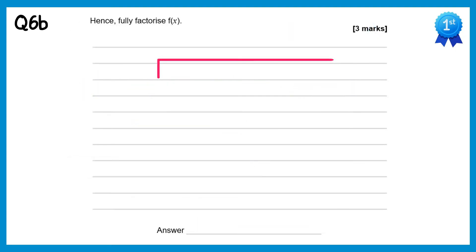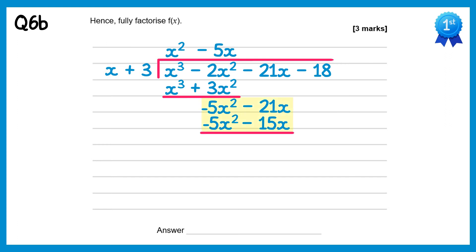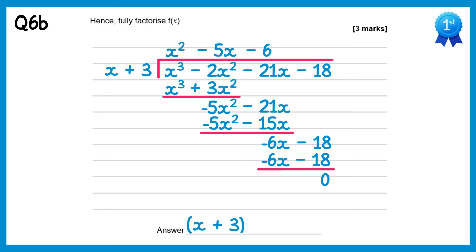Now to factorise this we'll do long division. We take the polynomial — remembering the value of a is negative 2, so it's negative 2x squared — and divide by the linear factor x plus 3. x cubed divided by x is x squared. Multiply back to get x cubed plus 3x squared. Subtract — the x cubes cancel and negative 2x squared take away 3x squared is negative 5x squared. Bring down the next term. Negative 5x squared divided by x gives negative 5x. Multiply back: negative 5x squared take away 15x. Subtract — the negative 5x squares cancel and negative 21x take away negative 15x gives negative 6x. Bring down the final term. Negative 6x divided by x gives negative 6, multiply back to get negative 6x take 18. Subtracting gives 0. So we've got x plus 3 times the quadratic, which factorises to x minus 6, x plus 1.